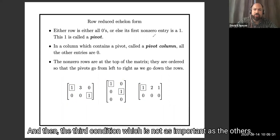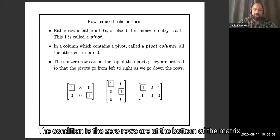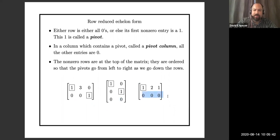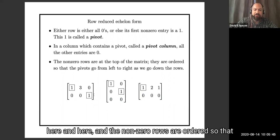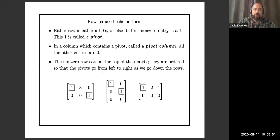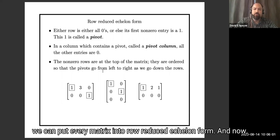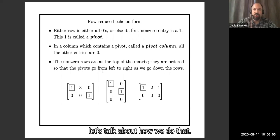The third condition, which is part of the standard definition, is about the ordering of rows. The zero rows are at the bottom of the matrix, and the non-zero rows are ordered so that the pivots go from left to right as we go from top to bottom. That's what we mean by row-reduced echelon form. And the fact is that by using our row operations, we can put every matrix into row-reduced echelon form.